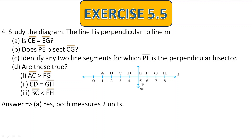The next question is: does PE bisect CG? Bisect means making half of that line — the measurement from both sides should be equal. PE, this line, bisects CG, which goes from here to here. It is making half of CG — two units here and two units here. Therefore, yes, PE bisects CG because CE is equal to EG.